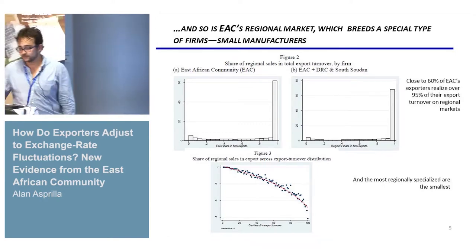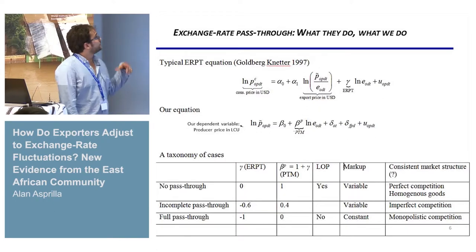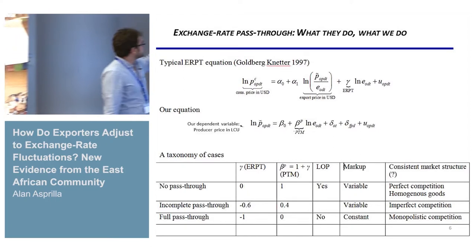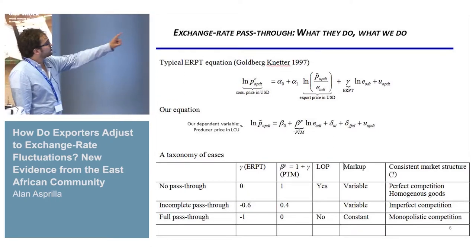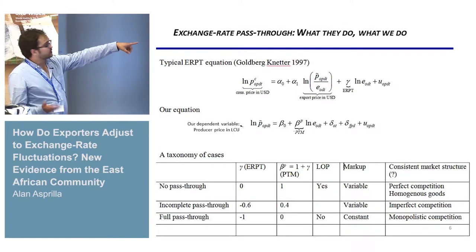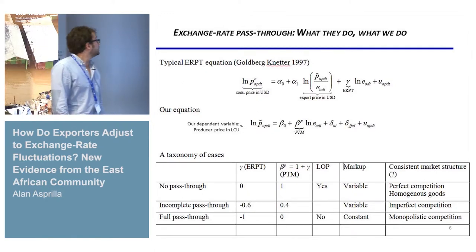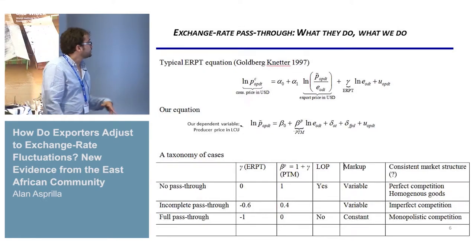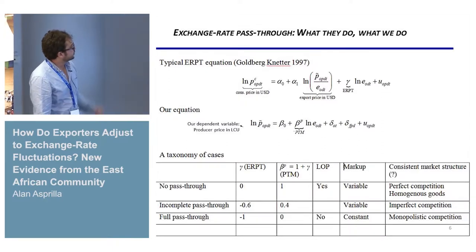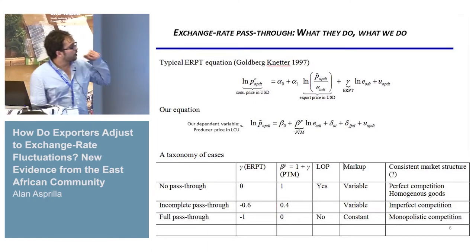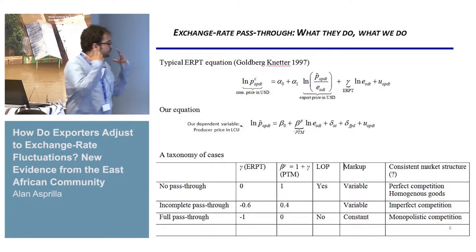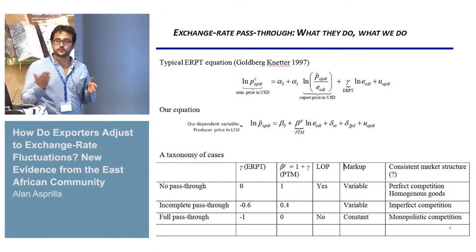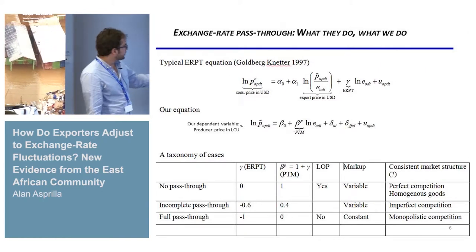In the literature, the standard approach estimates the price in the consumer country (LNPC) and looks for the effect of the exchange rate in the consumer country — the exchange rate pass-through (ERPT). What we do instead is look at the producing country side: we estimate beta P, the reaction of unit prices in the producing country to real exchange rate fluctuations. This is what is called pricing to market, and it is proof of imperfect competition.